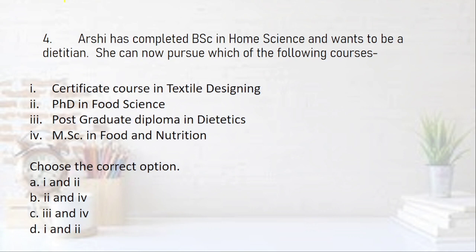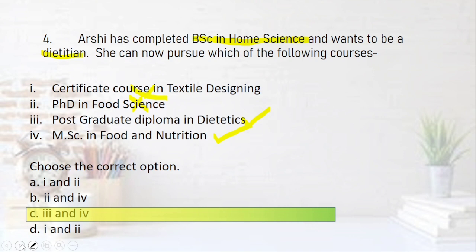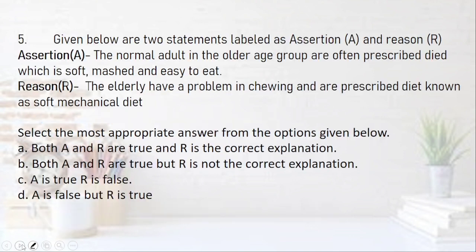Question four: Arshi has completed BSc in home science and wants to be a dietitian. She can pursue which courses? Certificate in textile designing — ruled out. PhD in food science — she hasn't done her master's yet, so ruled out. Postgraduate diploma in dietetics — yes, she can, she is already a graduate. MSc in food and nutrition — yes, she can also pursue MSc. So options three and four are correct, making option C the right answer.